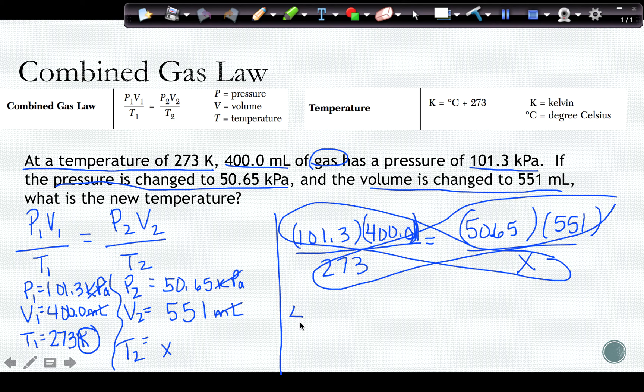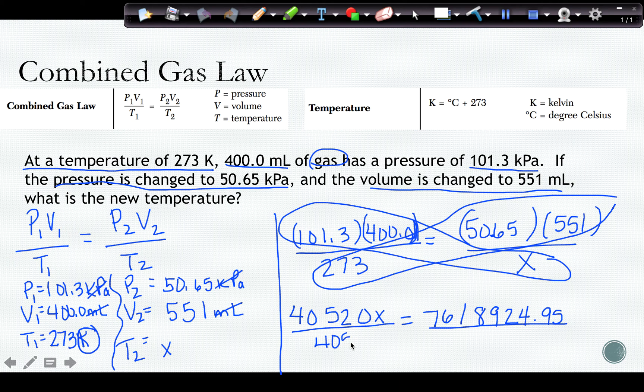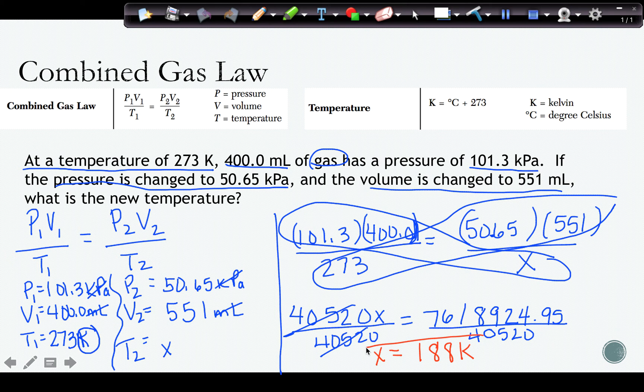Once I cross multiply, I get 40520X equals 7618924.95. I divide both sides by what's in front of X so that I can get X by itself. And I get that X equals 188 kelvins.